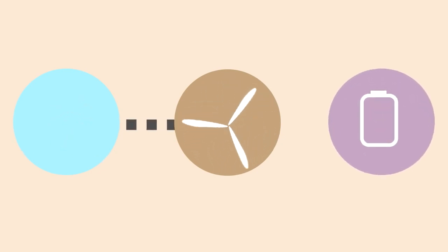They convert kinetic energy from the wind to mechanical energy. Through the rotational movement of the blades, an electric generator then converts this mechanical energy into electric energy.